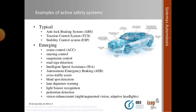Some examples of active safety systems are: ABS (anti-lock braking system), TCS (traction control system), and ECP (electronic stability control), which is also known as the stability control system.